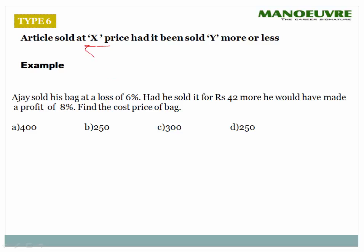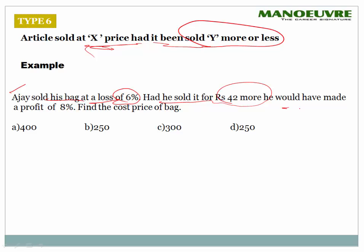Type 6: article sold at X price — had it been sold Y more or less. A sold his bag at a loss of 6%. Had he sold it for 42 rupees more, he would have made a profit of 8%. Find the cost price of the bag. Let cost price = X. SP at 6% loss = 0.94X.